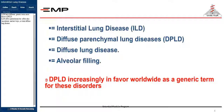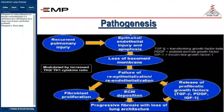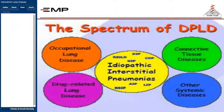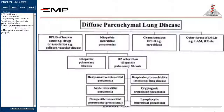ILDs affect parenchyma but also affect vasculature and airways, so they are termed diffuse lung disease. Pathogenesis is mainly not inflammation but abnormal wound healing — failure of re-epithelialization and re-endothelialization due to release of growth factors and fibroblast proliferation. Pathogenesis is fibrosis mainly.